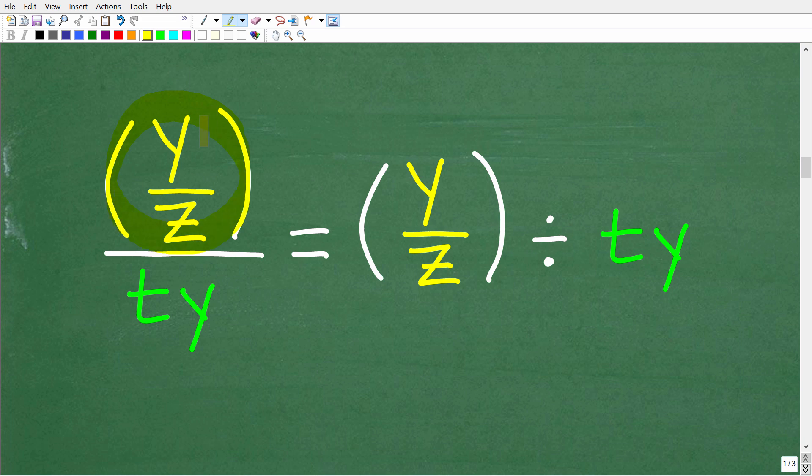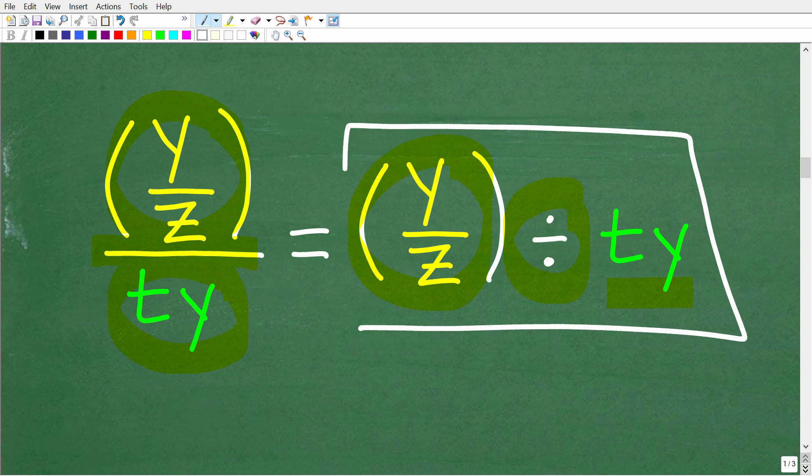And a complex fraction is a fraction where the numerator or the denominator or both is a fraction. So we have a fraction within a fraction. So we have this numerator y z, and it's being divided by ty. So we're going to write this expression this way. So we have y z divided by ty.